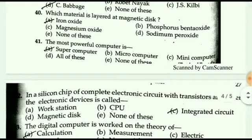Next question: which material is layered on a magnetic disk? The answer is iron oxide. Next question: which is the most powerful computer? The answer is supercomputer.